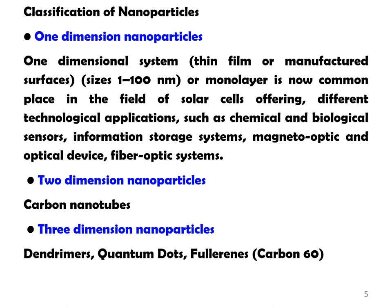There are various ways to classify nanoparticles. Based on shape and structure, nanoparticles can be classified as one-dimensional, two-dimensional, and three-dimensional. One-dimensional nanoparticles are thin films or monolayers with wide application in the field of solar cells, chemical and biological sensors, information storage systems, and magneto-optic or fiber optic systems. Their application is more in technology and they have very little pharmaceutical application.